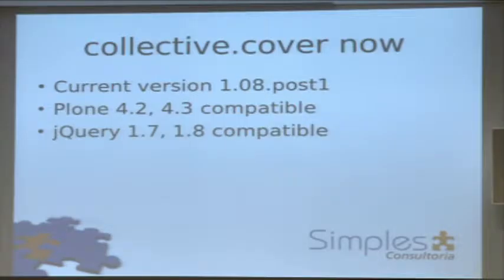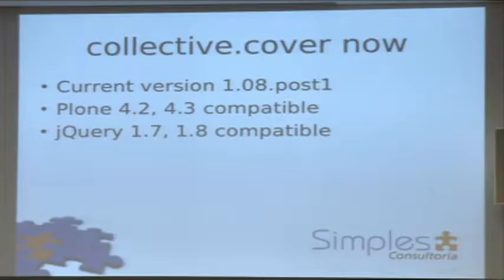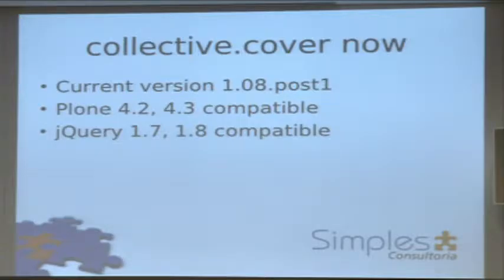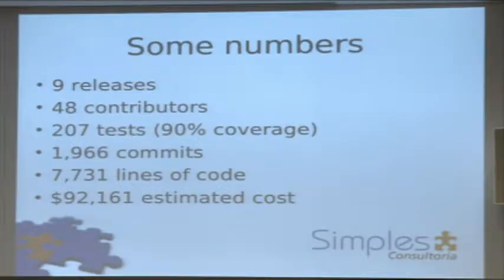Right now Collective Cover is on version 1.0 alpha 8 — with a post-release for an emergency fix. It's compatible with Plone 4.2 and 4.3. We have a Travis build set up for Plone 5, but we have no idea what's going on there; Plone 5 is going to be using jQuery 1.9 and it's not working right now. We are compatible with jQuery 1.7 and 1.8. We have made nine releases, and the package has been widely used in production sites, so it's safe to use.